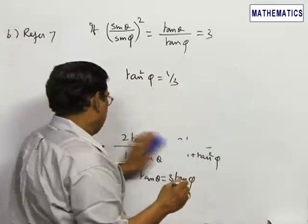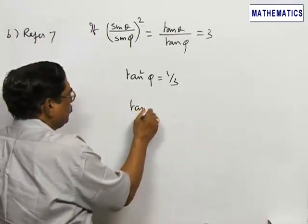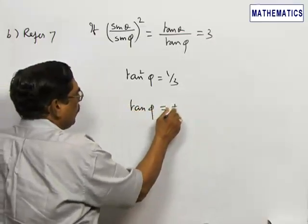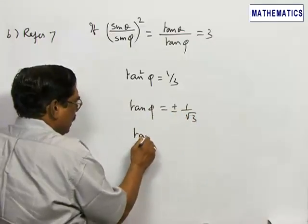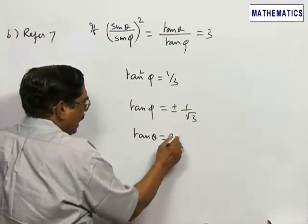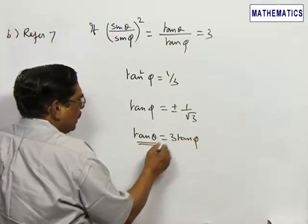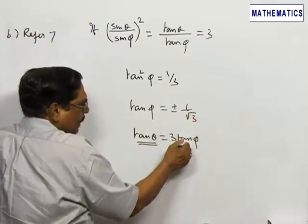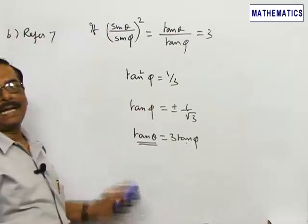Therefore tan φ = ±1/√3. Of course, tan θ = 3 tan φ, so this will be evaluated by substituting this value. Therefore, choice 3 is the correct answer.